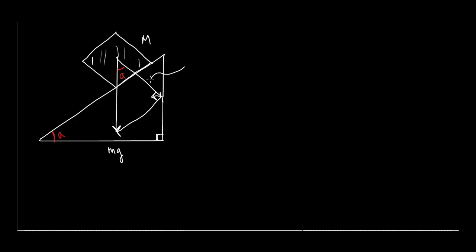This arrow here is supposed to be the component of the weight that's acting perpendicular to the ramp, which is M·G·cosine of angle A. I've been calling that angle theta in class, but I'm calling it angle A right now. And this is the component of the weight M·G that's acting parallel to the ramp. I typically draw this up here — but it's the same thing — this component would be M·G·sine A.